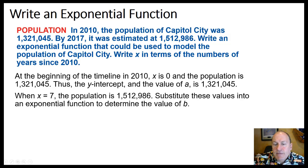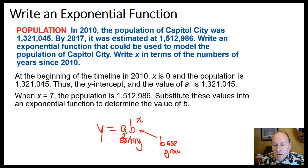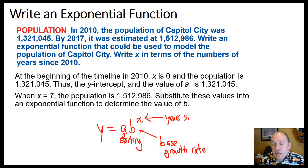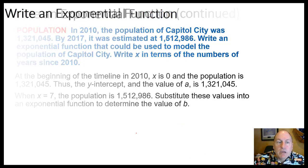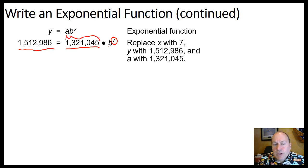In 2017, x equals 7, and we know that estimated population. We'll substitute these values into the model for exponential growth or decay, y equals a times b to the x, where a is the starting amount, b is the base representing the growth or decay rate, and x is the number of years since 2010. So we substitute: 1,512,986 equals 1,321,045 times b to the 7th. This lets us determine how much the population grew once we figure out b.